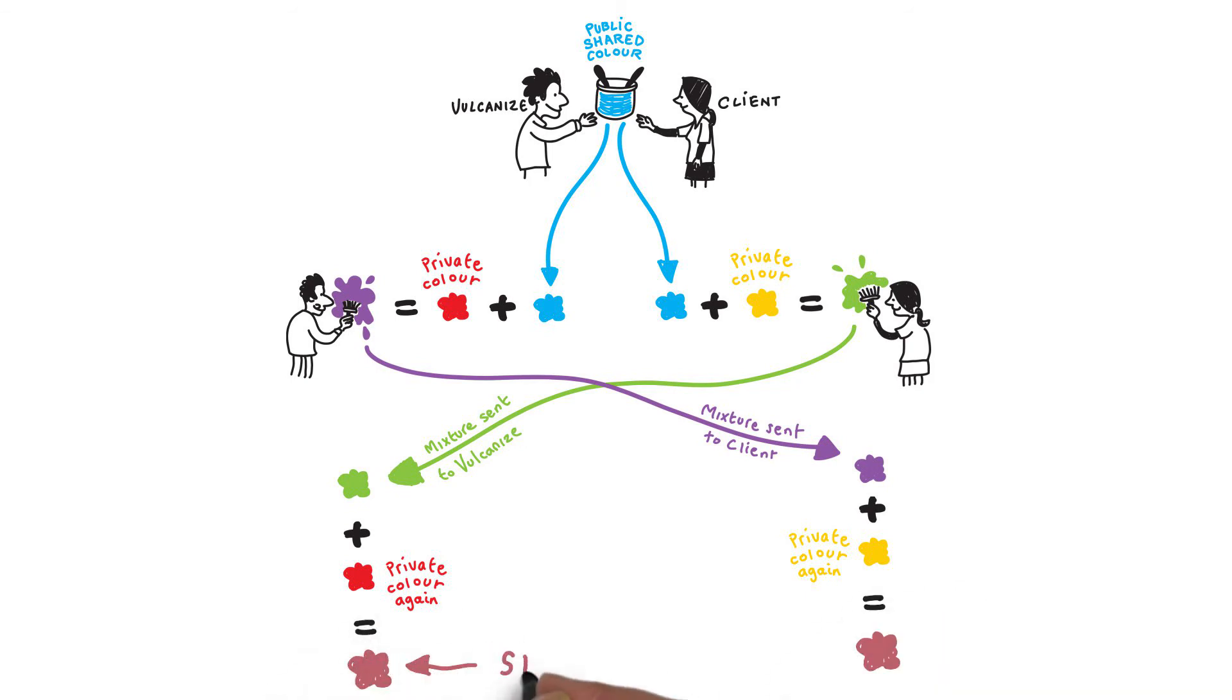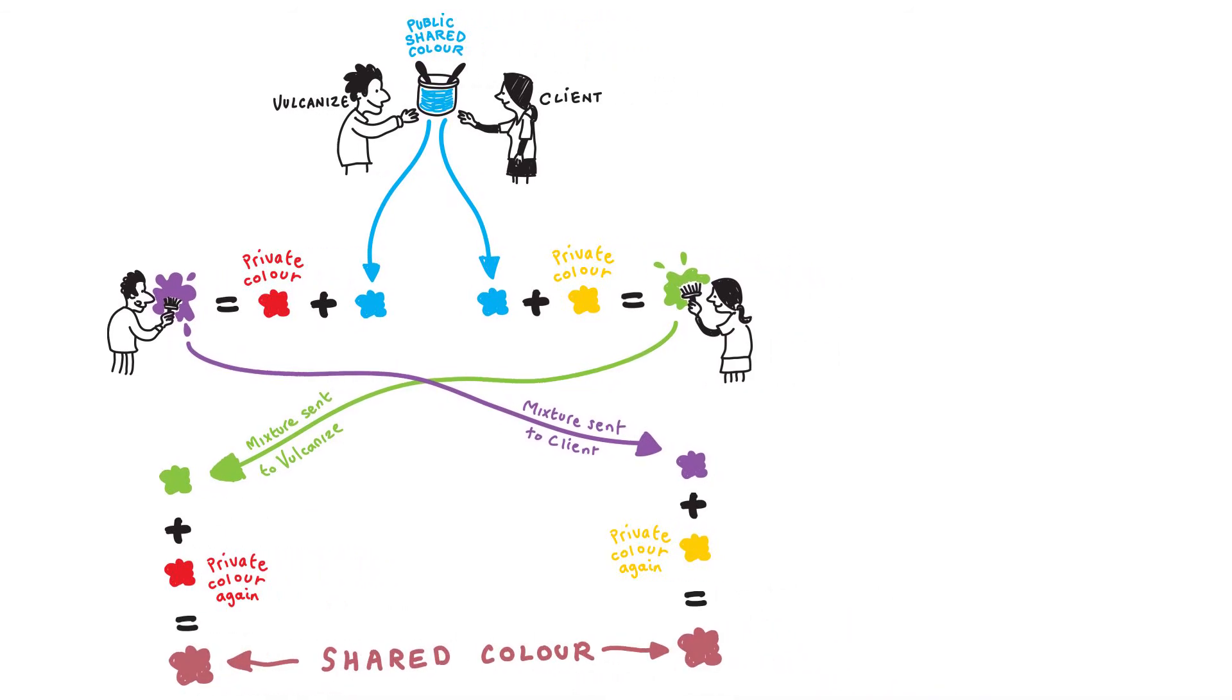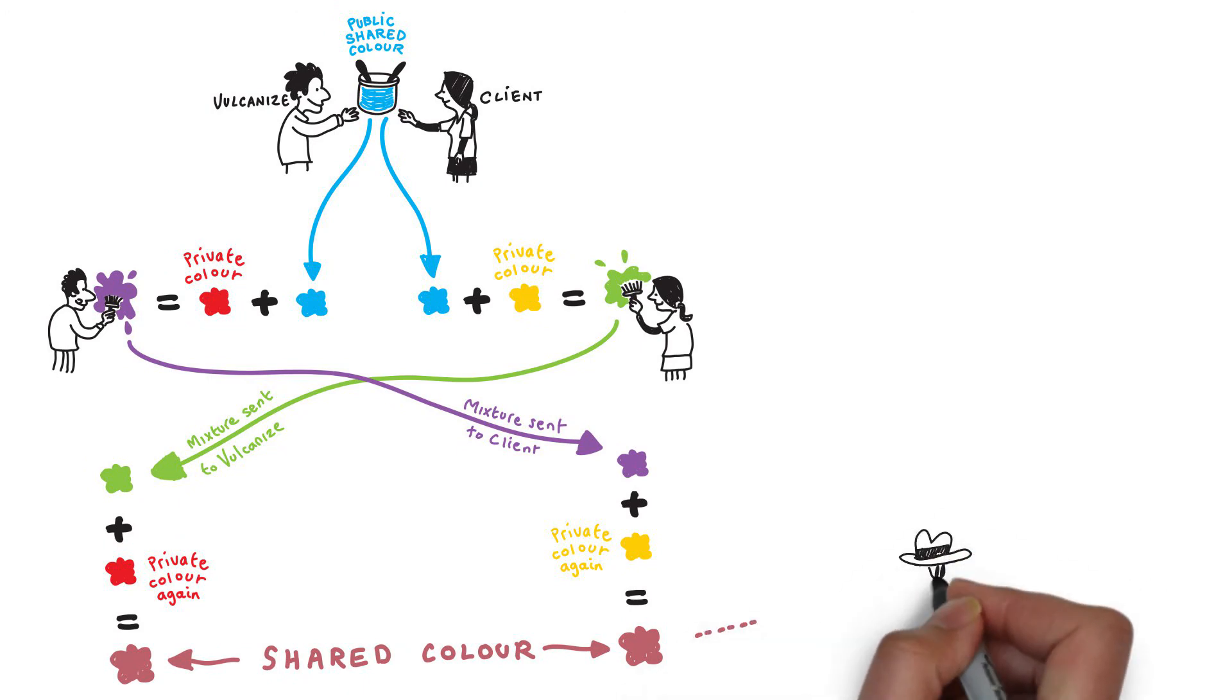If someone was trying to intercept these colors to also gain access to this secret shared color, they would be unable to end up at the same result as they're missing a key ingredient, in this case one of the private colors of red or yellow.